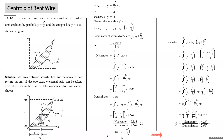Next problem: the area under the curve is not resting on either axis, so the elemental strip can be taken vertical or horizontal. We'll integrate with respect to x using a vertical strip. Locate the coordinates of the centroid of the shaded area enclosed by the parabola y = x²/4 and the straight line y = x. The elemental strip is of thickness dx at distance x from the y-axis. The height of the strip is y' = y₂ − y₁.